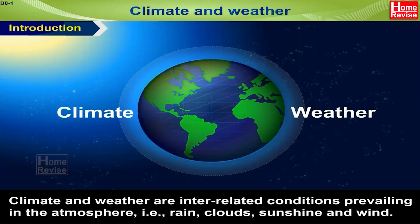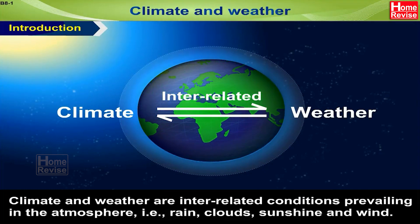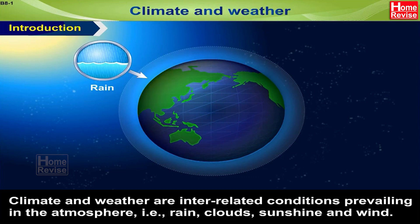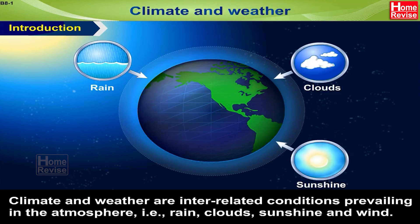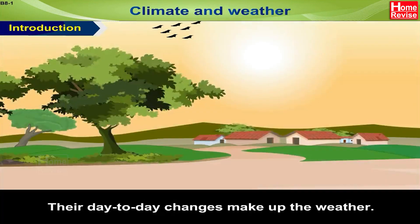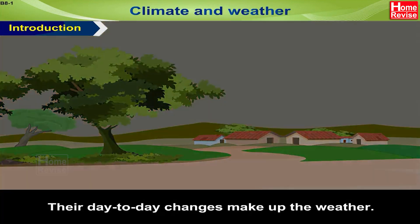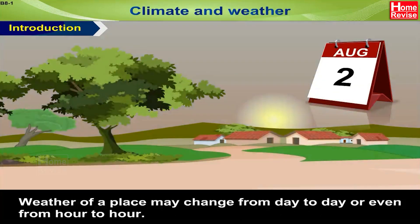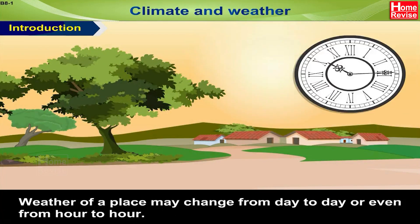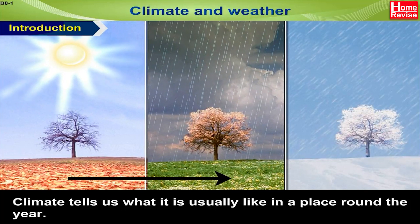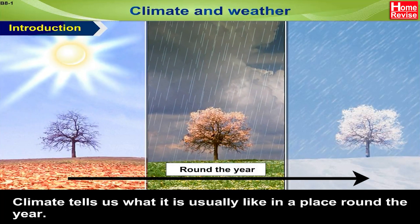Climate and weather are interrelated conditions prevailing in the atmosphere, i.e. rain, clouds, sunshine and wind. Their day-to-day changes make up the weather. Weather of a place may change from day-to-day or even from hour-to-hour. Climate tells us what it is usually like in a place round the year.